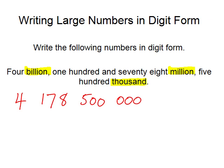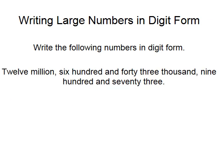This is the last slide in this video. We're asked to write 12,643,973 in digit form. Our keywords are millions and thousands, so it is 12,643,973. I've probably exaggerated the spaces a bit much there.